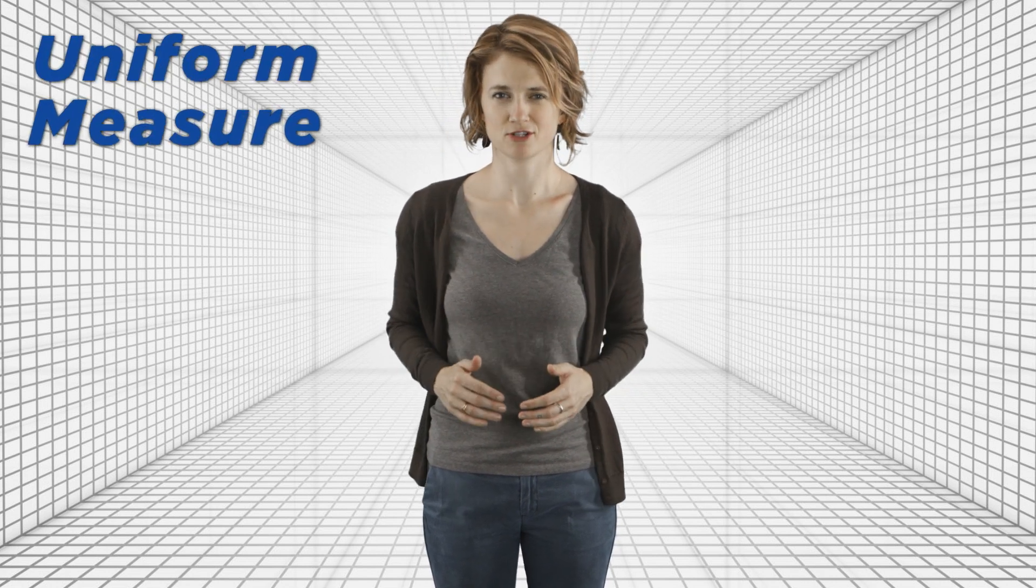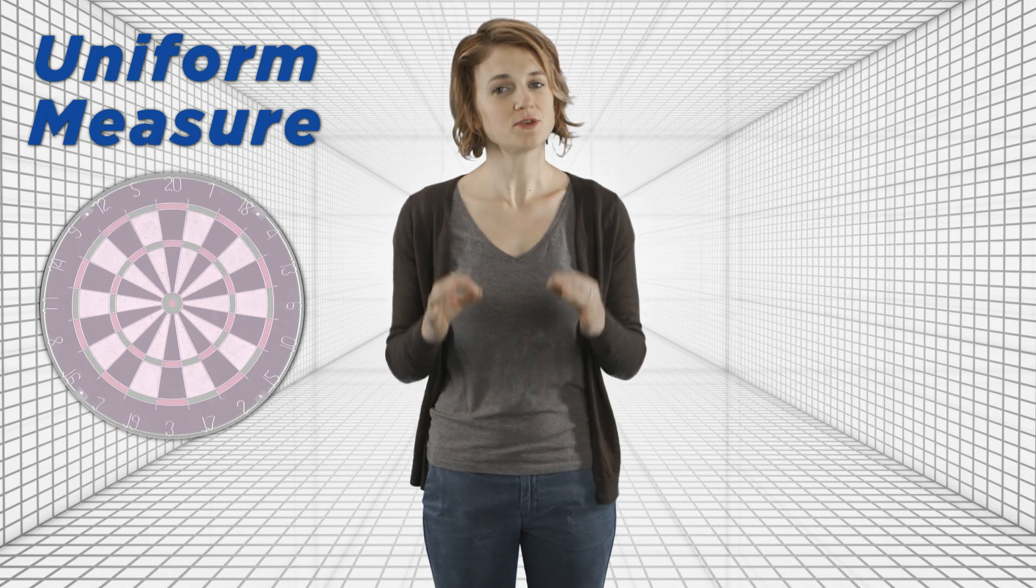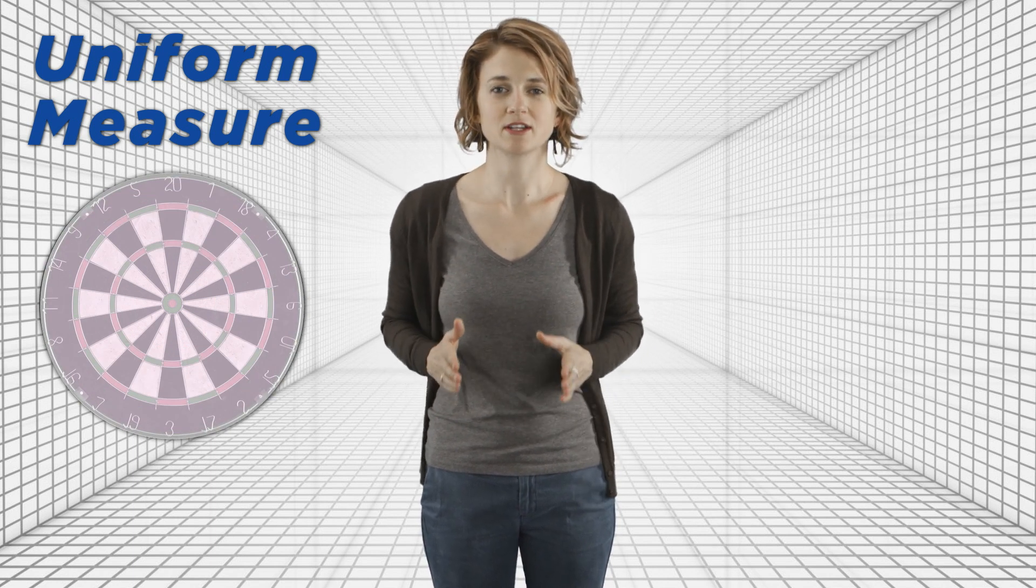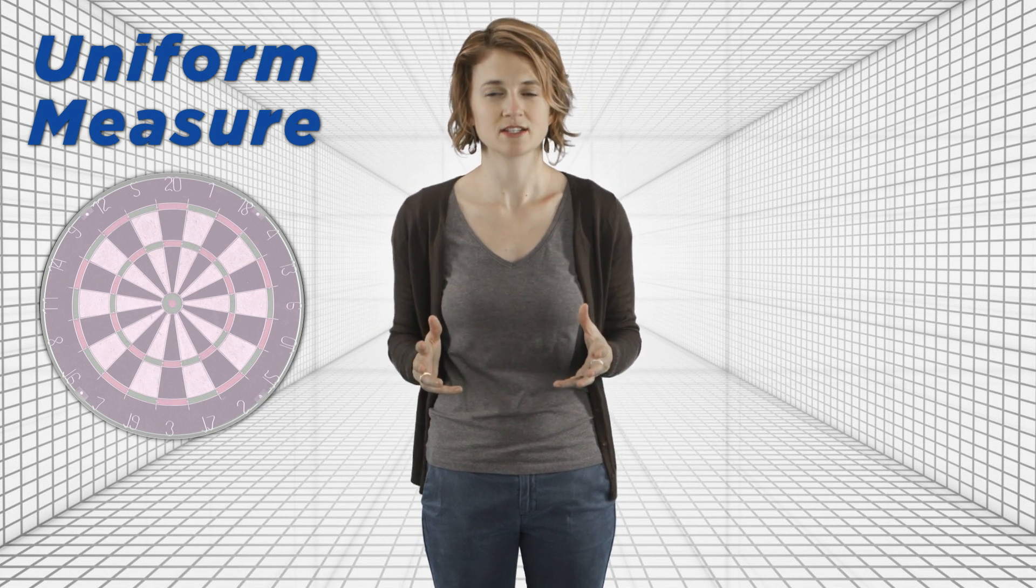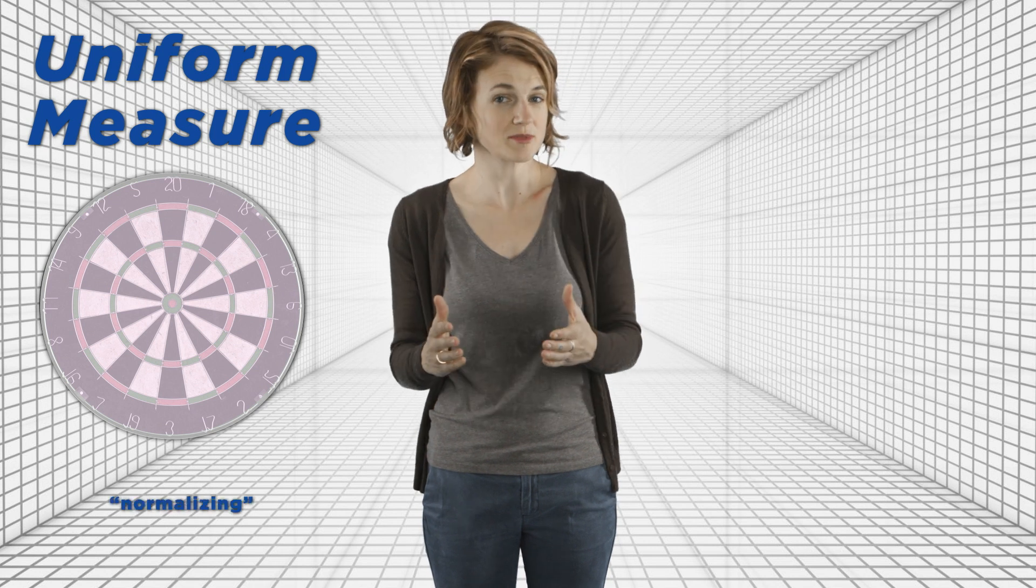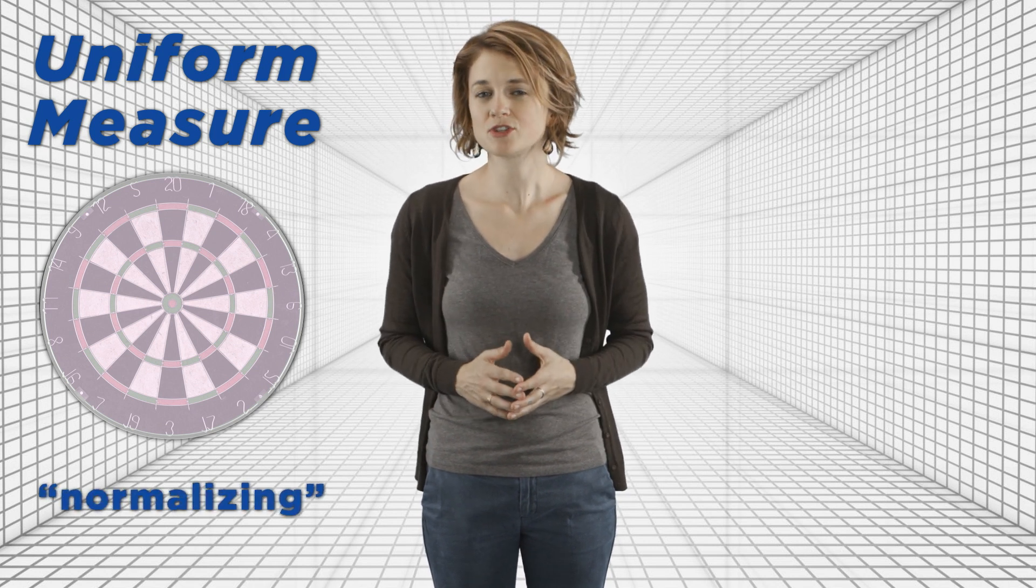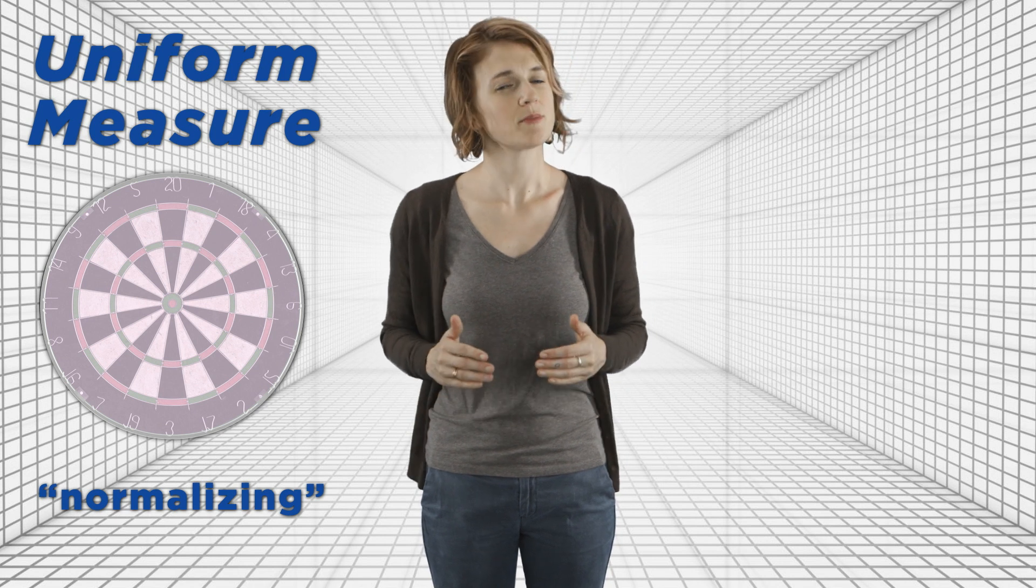In the previous example, you were throwing wildly at the dartboard, equally likely to hit each point. That's called a uniform measure. The area is uniform across the dartboard. With the uniform measure, the probability associated with each region is the area of the region divided by the area of the entire dartboard. It's normalizing, which is why there's no uniform measure on the entire real number line.